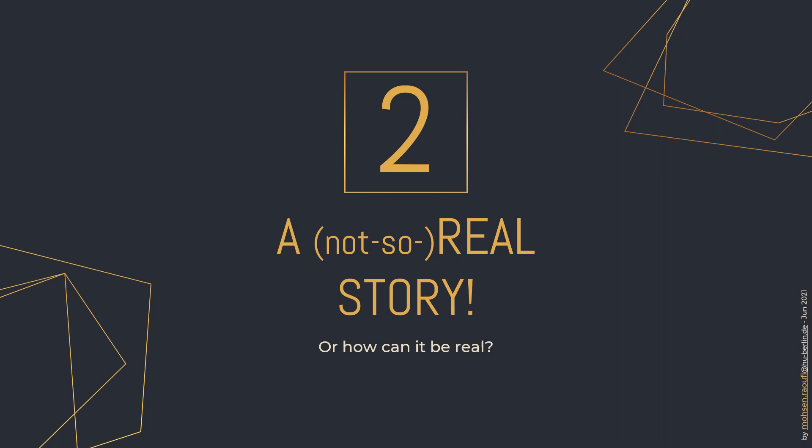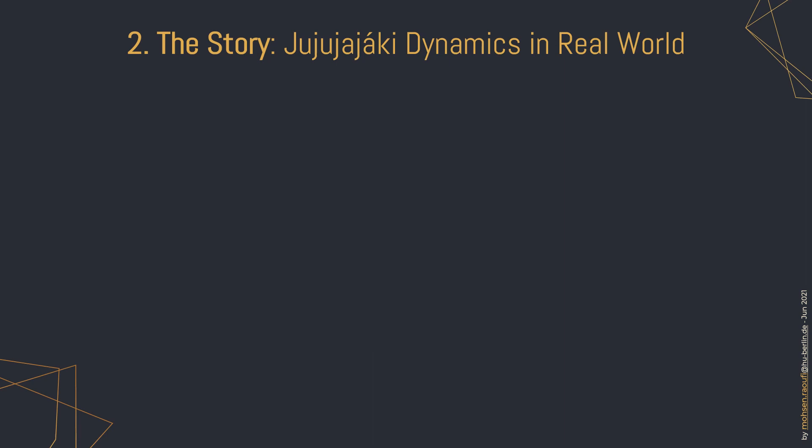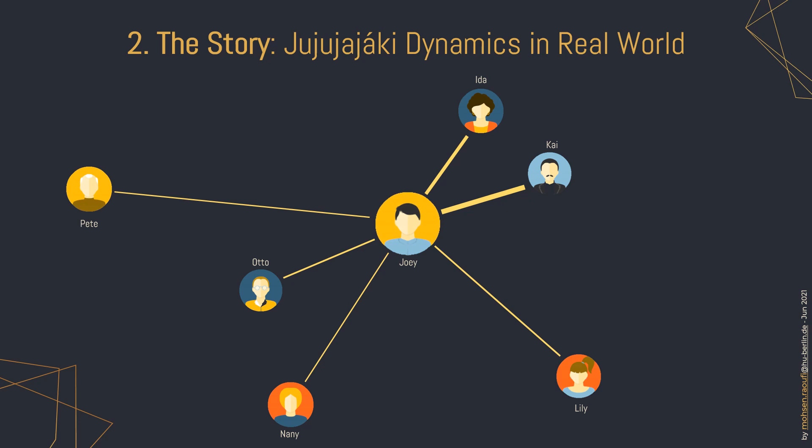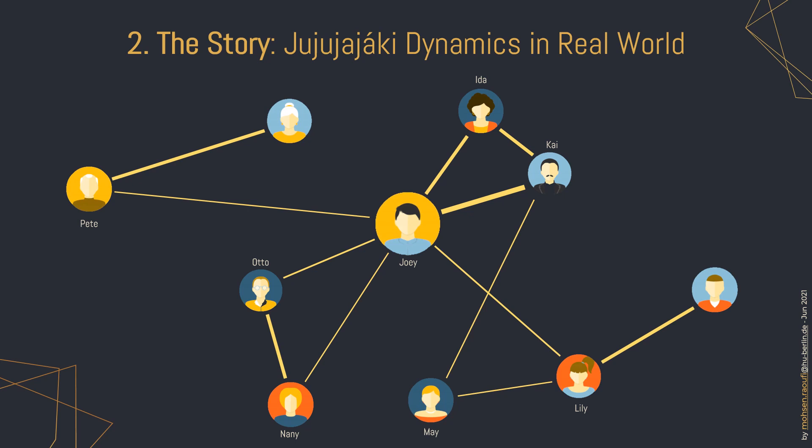In the next couple of slides, I will tell you a friendship story of a group of friends that might capture the dynamics of Juju Networks. This is Joey. Joey has two close friends, Ida and Kai. Of course, he has more friends and acquaintances with different levels of intimacy, and they also have their own friends, just a few of which are shown here.